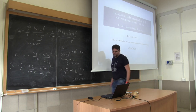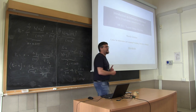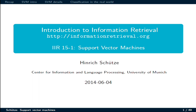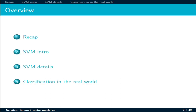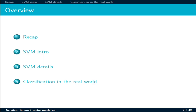We are going to talk about support vector machine, which is another classification algorithm. First, a short recap as usual. Before going through SVM, what is the purpose of a classification algorithm in general? And can you give me some examples of the employment of classification algorithms in information retrieval tasks?